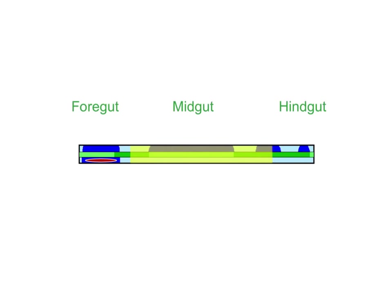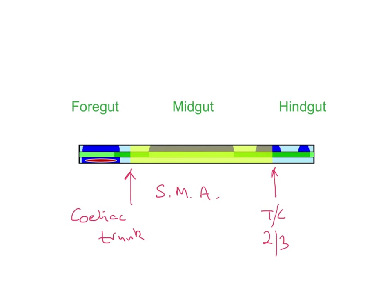In this view you can see the tube again with the foregut, midgut, and hindgut delineated. The foregut terminates halfway through the duodenum and is supplied by the celiac trunk, a branch of the aorta. The midgut extends from halfway through the duodenum to two-thirds of the way across the transverse colon, supplied by the superior mesenteric artery. The hindgut, from where the midgut finishes to the end of the tube, is supplied by the inferior mesenteric artery.